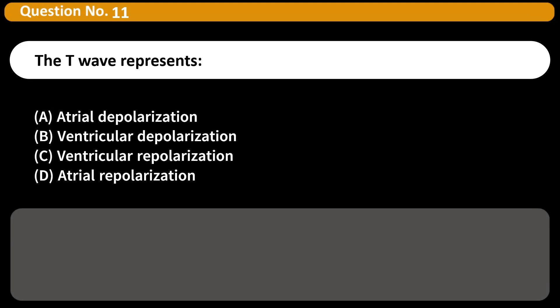The T wave represents A. Atrial depolarization B. Ventricular depolarization C. Ventricular repolarization D. Atrial repolarization Answer C. The T wave reflects the recovery, repolarization, of the ventricles after contraction.